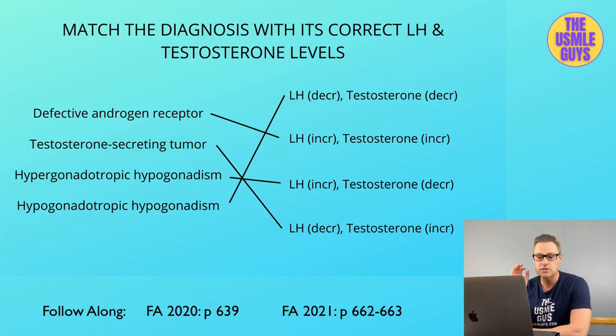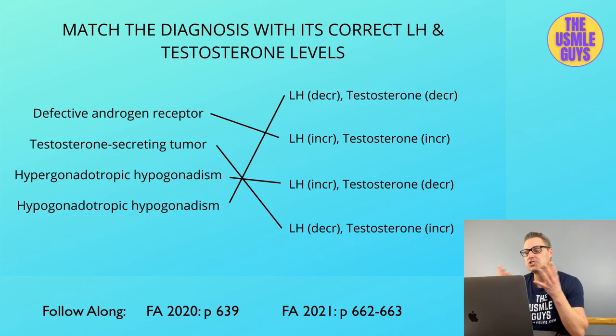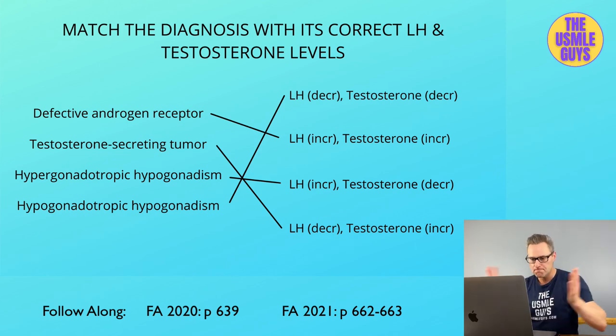In Kallmann syndrome, decreased levels of GnRH, FSH, LH, and testosterone are all seen because GnRH — the one that regulates it all — is missing.